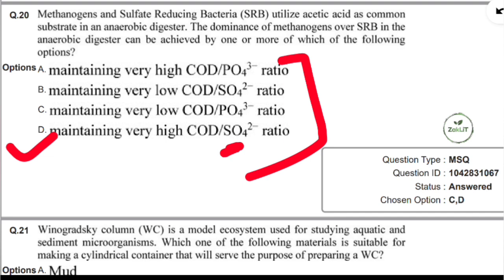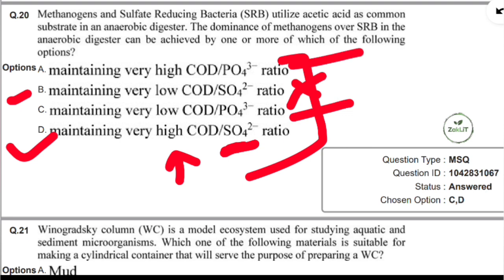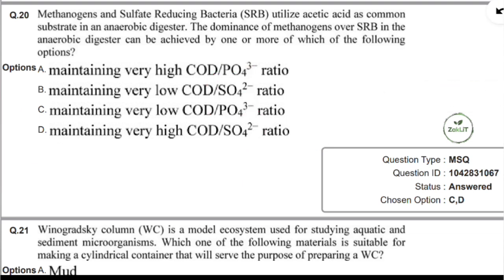When the COD to sulfate ratio is very high, sulfate is low in the denominator, meaning SRB cannot get enough sulfate to carry out sulfate reduction, so they are suppressed. With more COD available, methanogens become active and dominant. In options where the ratio is very low (low COD, high sulfate), SRB would be favored — not what the question asks. So option D is correct: a very high COD to sulfate ratio promotes methanogen dominance.